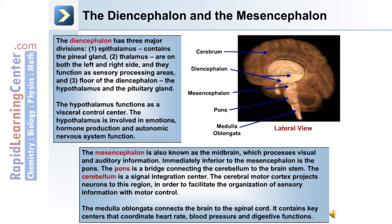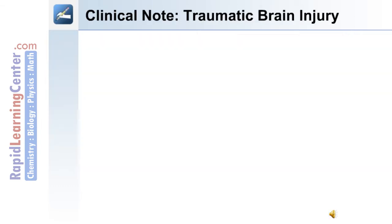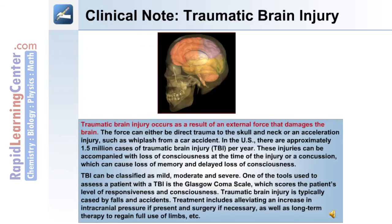The following is a clinical note on traumatic brain injury. Traumatic brain injury, or TBI, occurs as a result of an external force that damages the brain. This can either be directly against the skull and neck, or an acceleration injury such as whiplash from a car accident.